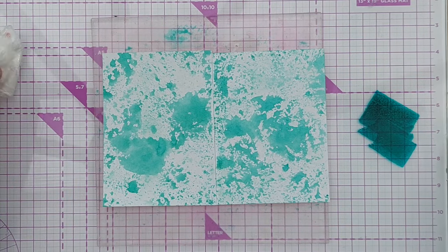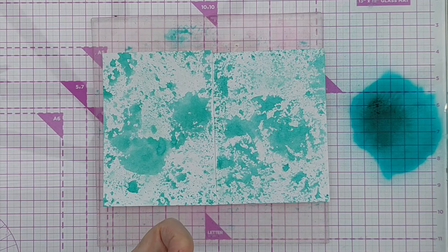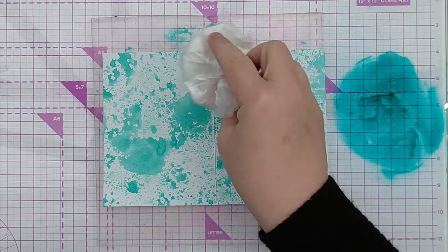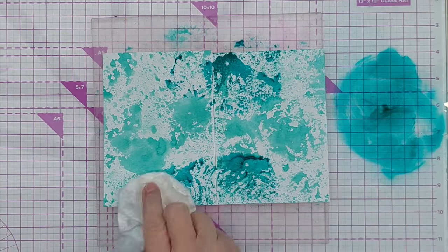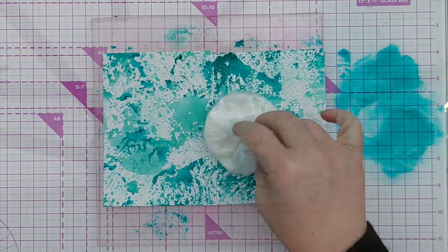And finally I smushed on the very darkest color, I think this one's called Uptown, and I was very careful about how I put this on because it's so dark that I thought it would very easily obscure the lighter colors beneath it.